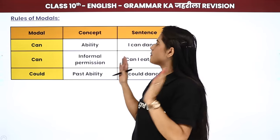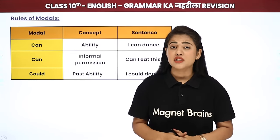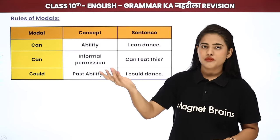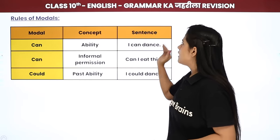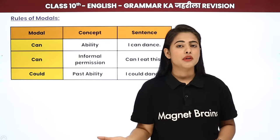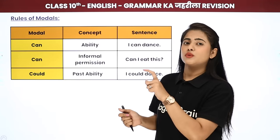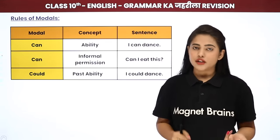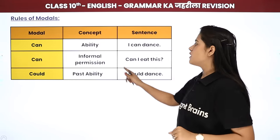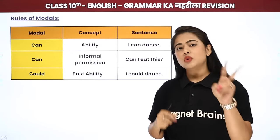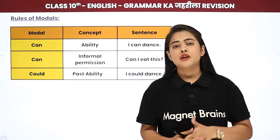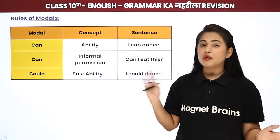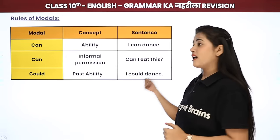Sabse pahla aur sabse common modal hota hai CAN. Iska main function hota hai kisi bhi sentence mein ability ya inability ko darshana. Agar koi cheez koi kar sakta hai — that is ability — toh aap use karenge CAN. For example: 'I can dance.' Inability ke liye bhi CAN use hota hai, but 'cannot' ke form mein — 'I cannot dance.' CAN ka ek aur common use hota hai informal permission, jaise 'Can I come in?' — jo informal tarike se permission maangna hota hai, formal nahi.